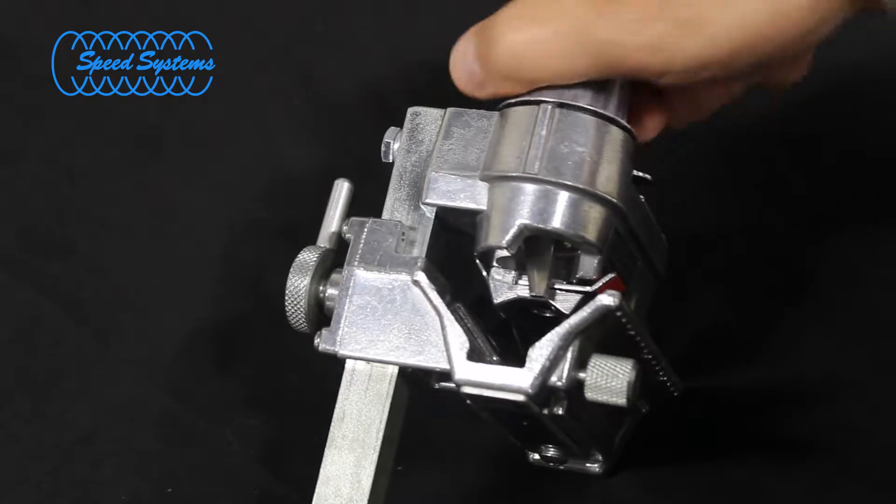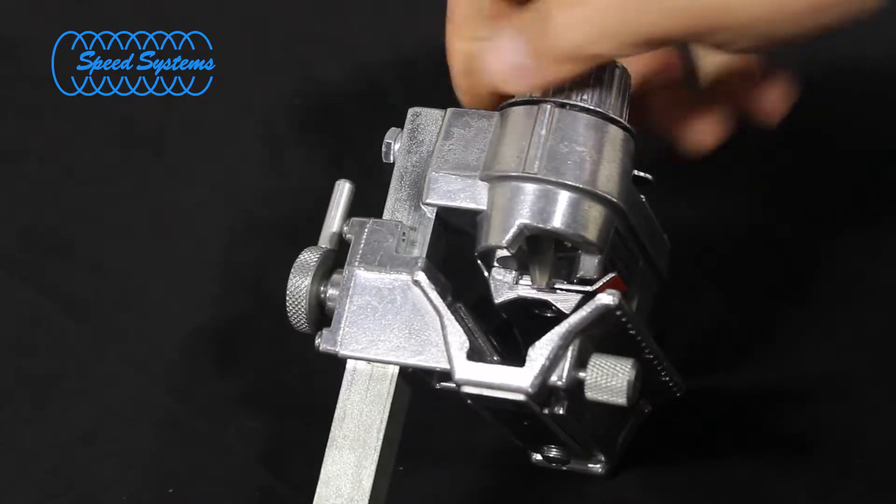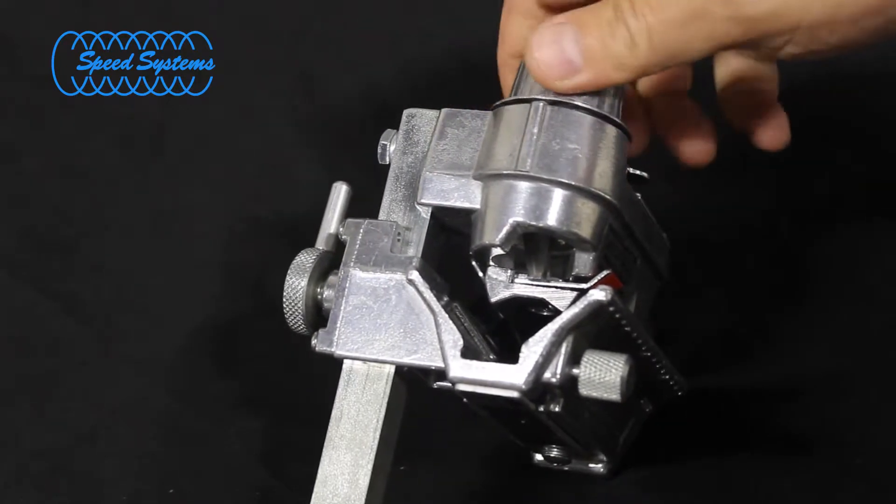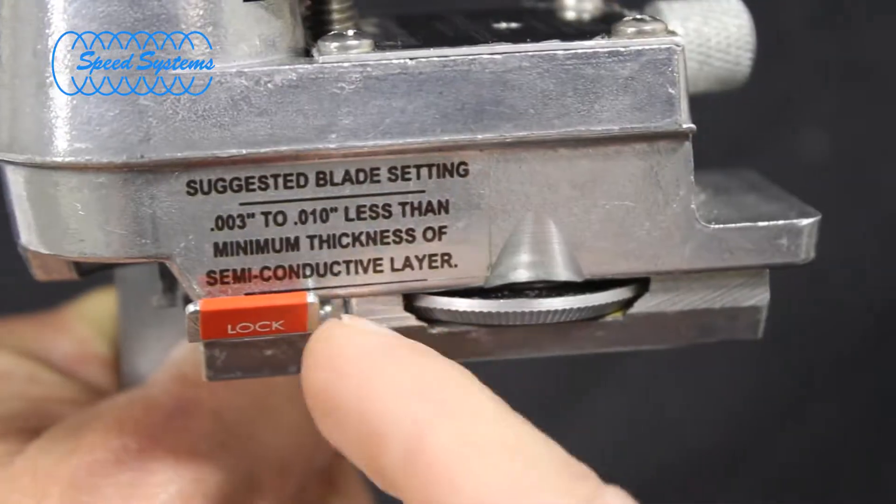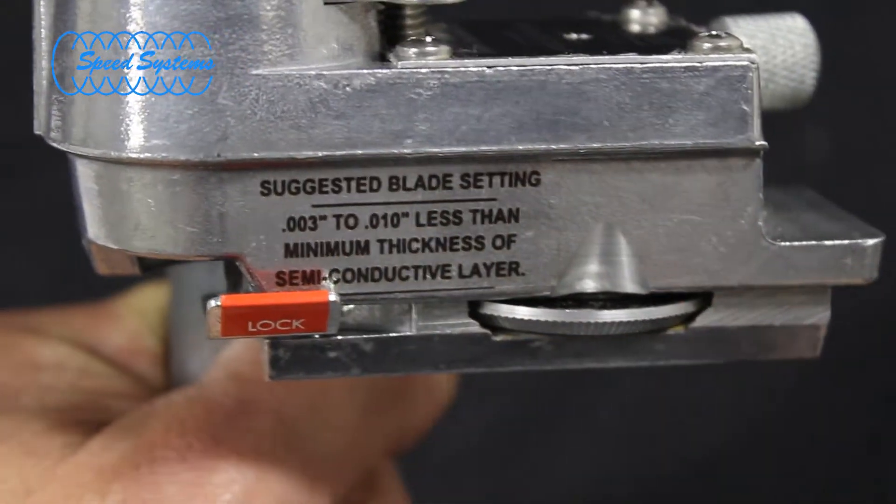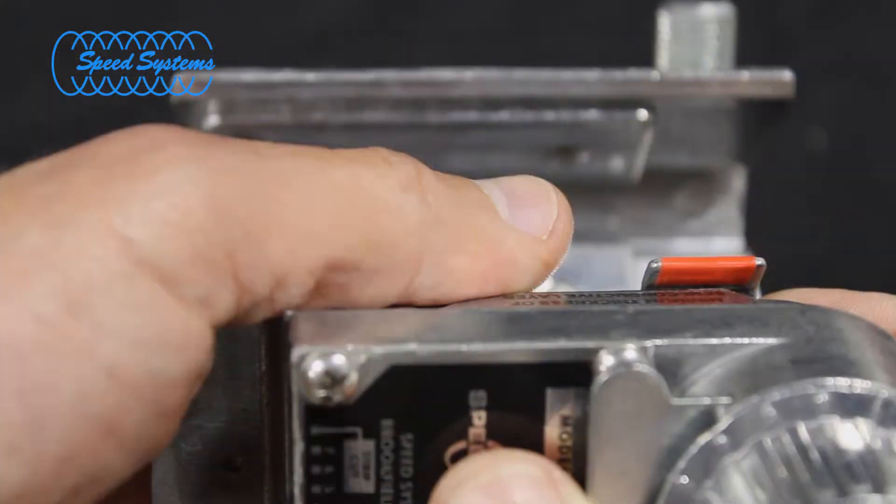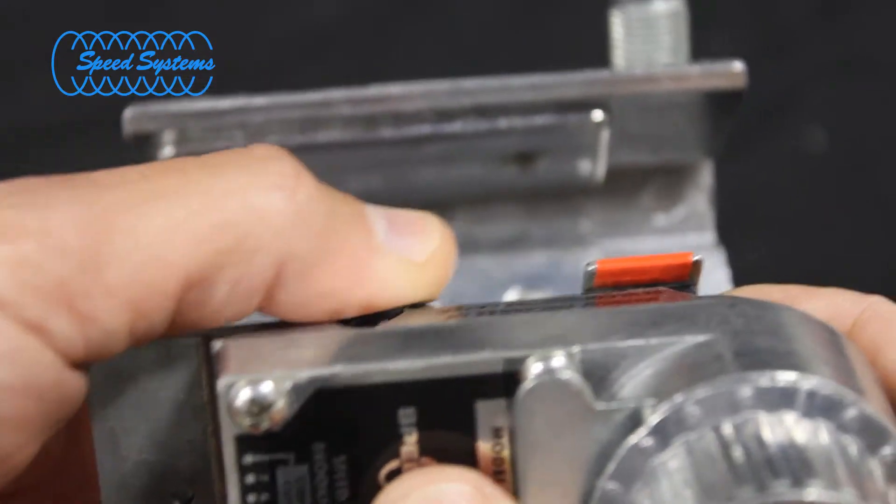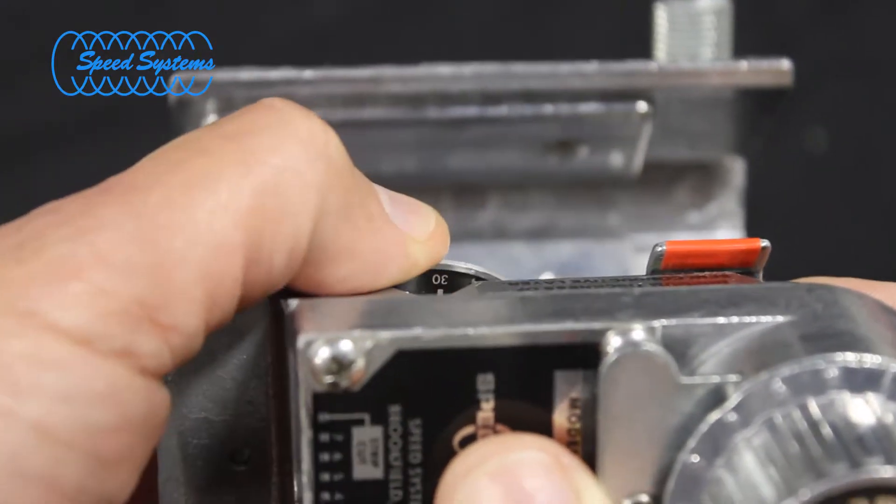Set the 1542-2AS to the scoring function by fully retracting the stripping blade. Slide the lock to the scoring position and extend the scoring blade. Be careful to set the blade depth to avoid hitting any of the neutral wires.